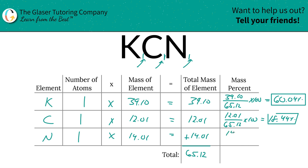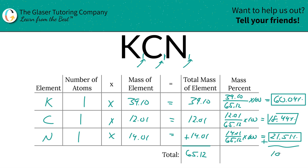Nitrogen is 14.01. We're going to divide it by 65.12, the total, and multiply it by 100. You see how nice and simple this is once you have a structure — this table creates structure, and structure is very important when learning something. If you add them all together, it should work out to be 100, and that's what you got on the question.